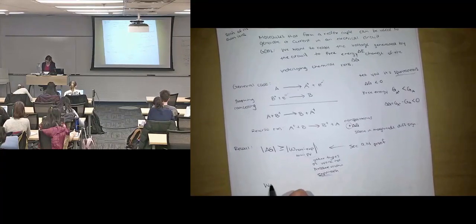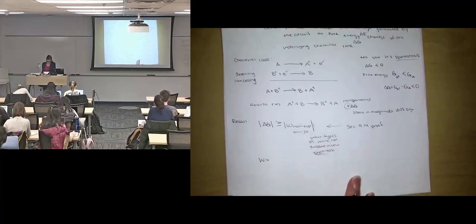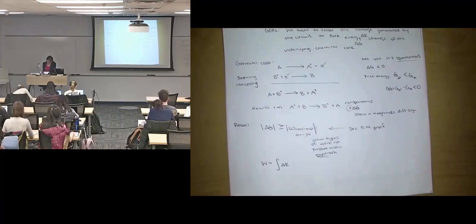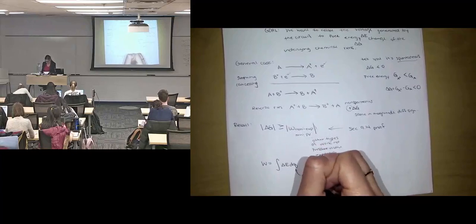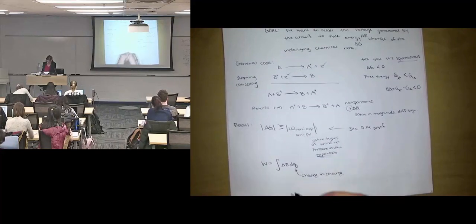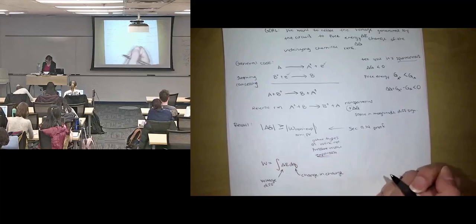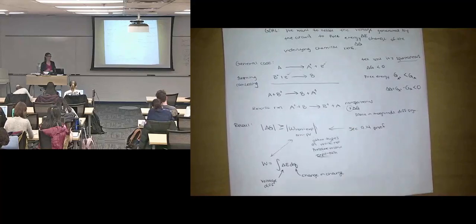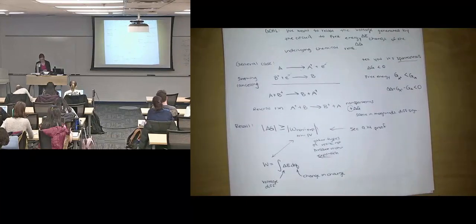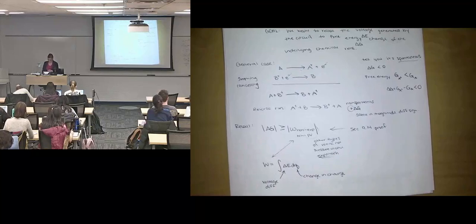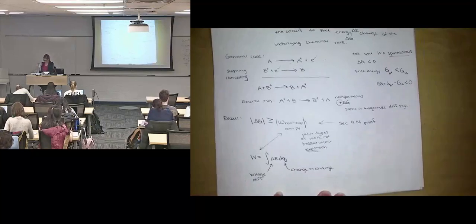And then another thing we saw on a previous table was work is equal to the integral of the difference in electric potential integrated over dq. dq in this case, it's not heat, it's change in charge. This is change in charge, this is a voltage difference. And so I think given what's going on here you can anticipate the relationship to delta G. I'm just going to drop it down into this equation.